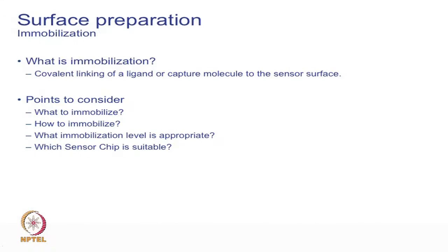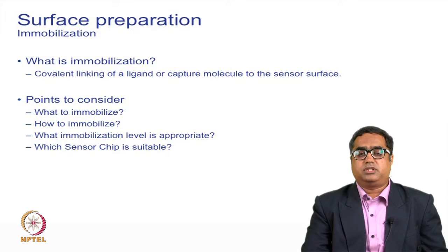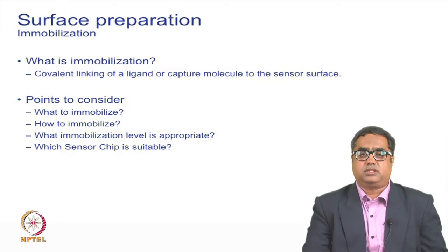Surface preparation is essentially immobilization, which is generally done by two ways: covalent linking and the capture method. When going for immobilization, the very important points to consider are what to immobilize, how to immobilize, what is the appropriate level, and what is the right sensor chip required.